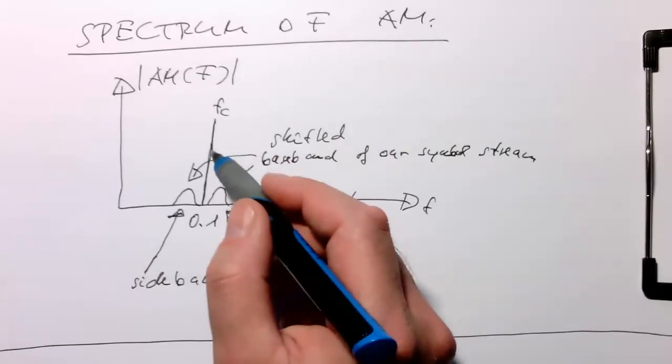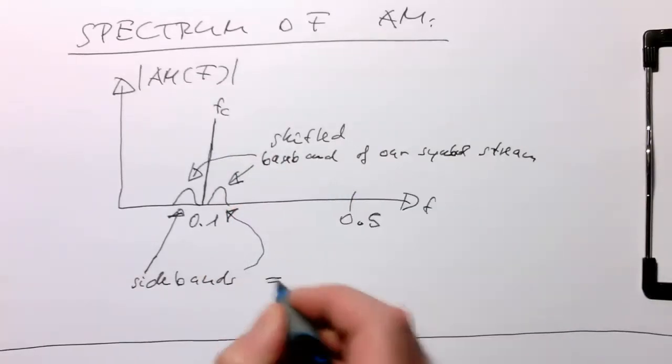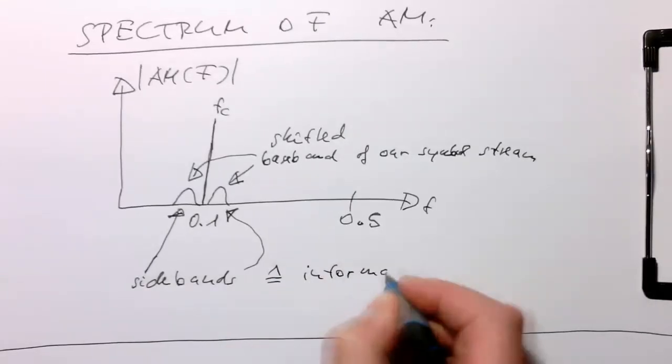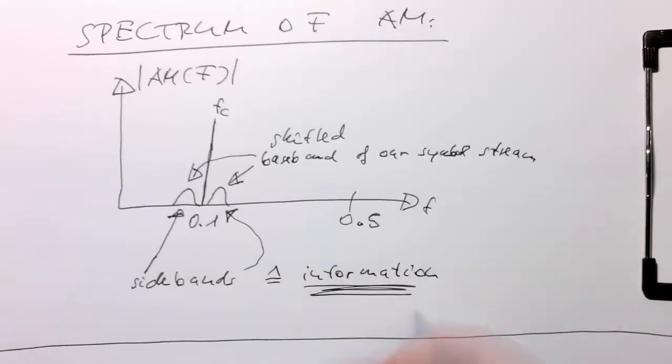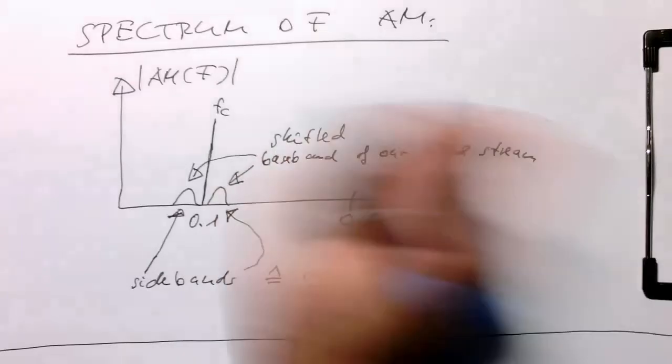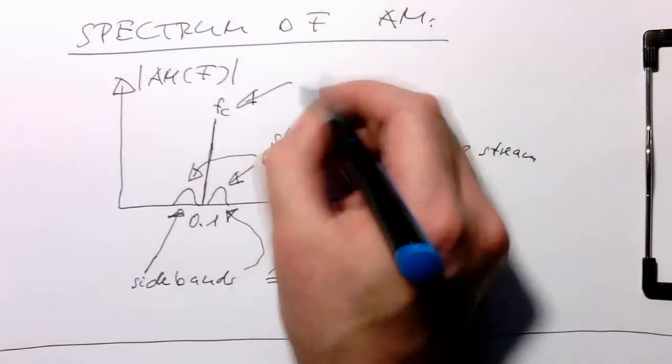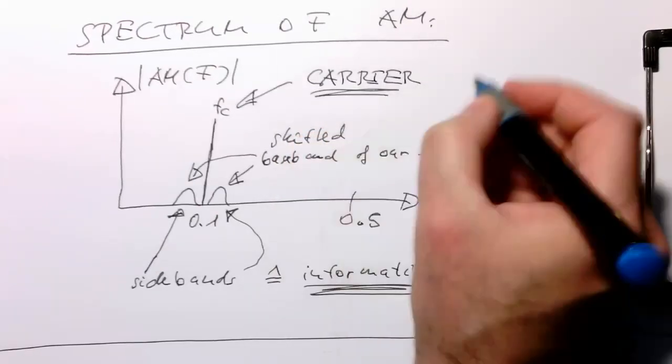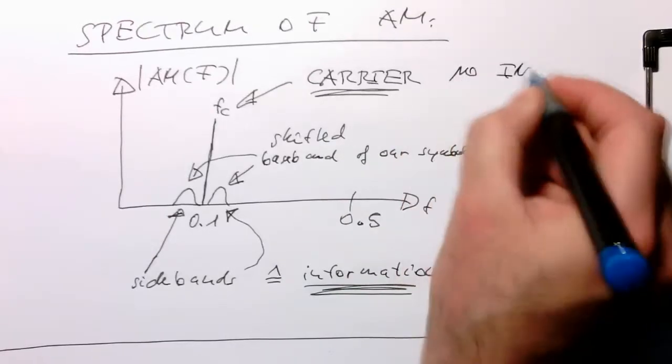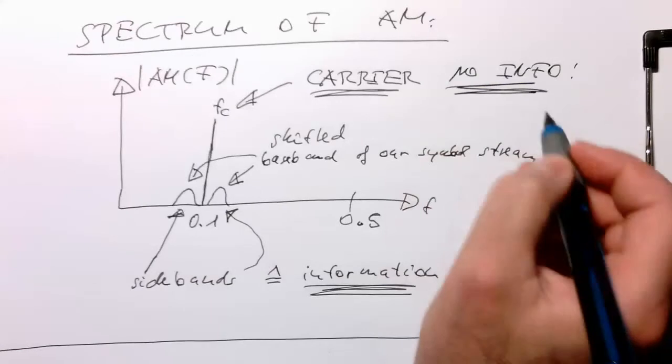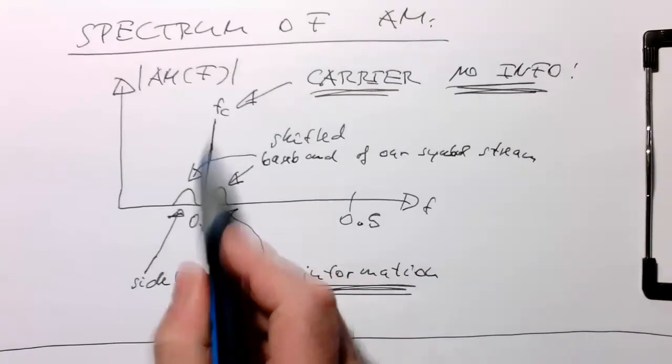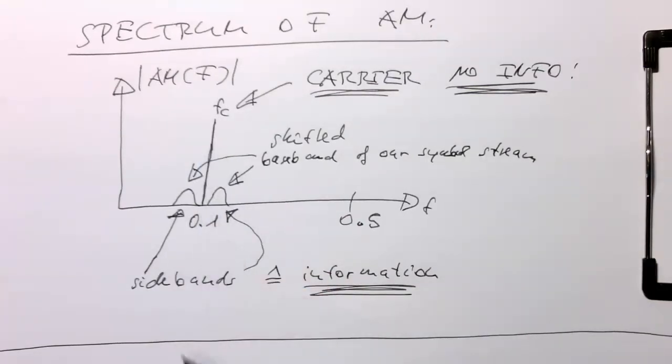And here, the carrier, so that's our carrier, has got no information. And so we see the fundamental problem of AM here, that the carrier is huge and wastes lots of energy, whereas the sidebands, which actually have the information, are quite small.